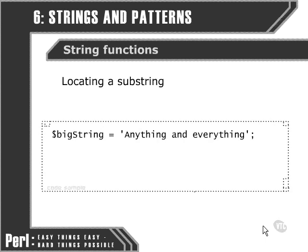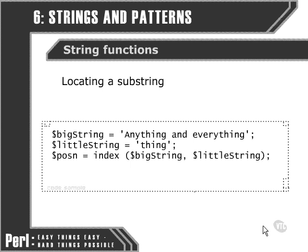We're starting with the same large string from which we're going to pull our substring. However, this time, we don't know a specific place in the string at which we're going to find our substring. All we know is that we're looking for the substring 'thing'. What we can use to achieve this is a different function called index. What index gives us is not a string, but the position at which the particular string that we're searching for can be found. So what we end up with here is the numeric value of the position.